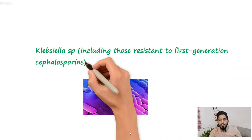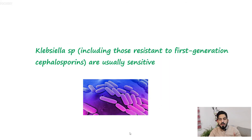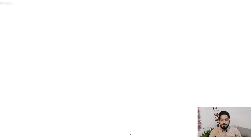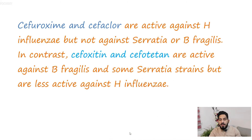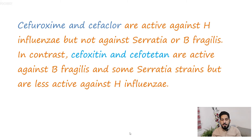Klebsiella species, including those resistant to first generation cephalosporins, are usually sensitive to second generation cephalosporins. Cefuroxime and Cefaclor are active against Haemophilus influenzae but not against Serratia or Bacteroides fragilis. In contrast, Cefoxitin and Cefotetan have activity against anaerobic bacteria, are active against Bacteroides fragilis and some Serratia strains, but are less active against Haemophilus influenzae.